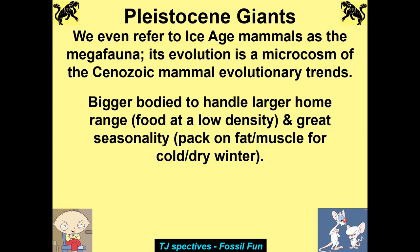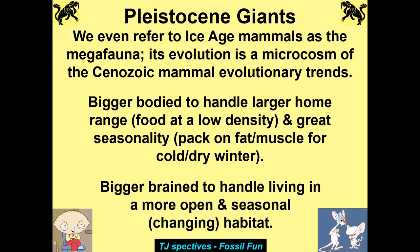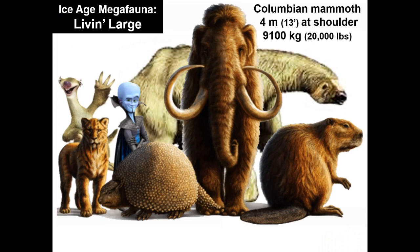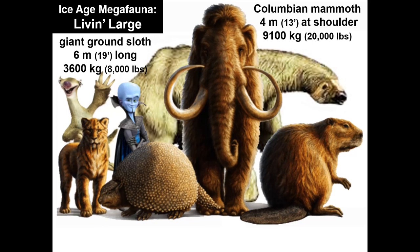They're built to handle a larger home range, foods at lower density, and great seasonality — packing a lot of fat and muscle for cold, dry winters. The Ice Age megafauna: they're living large. We have the Columbian mammoth — four meters at the shoulder, 9,100 kilograms — that's a huge elephant. Giant ground sloth — six meters long, 3,600 kilograms. Glyptodon — try to flip one of those over — three meters, 770 kilograms.